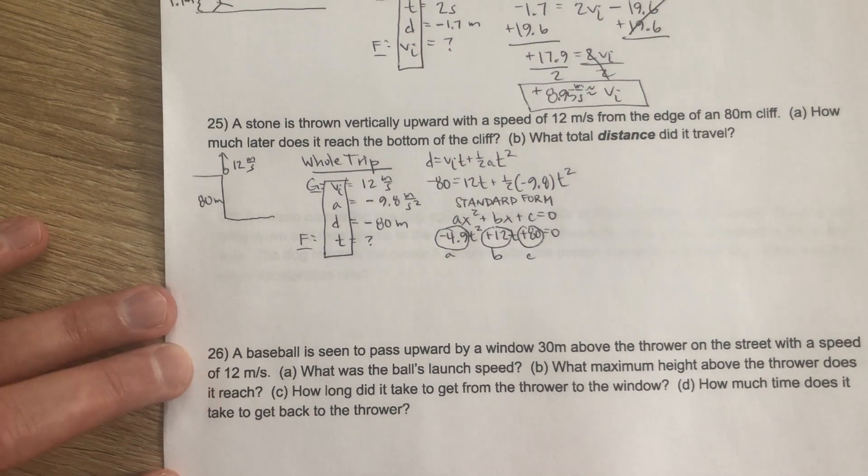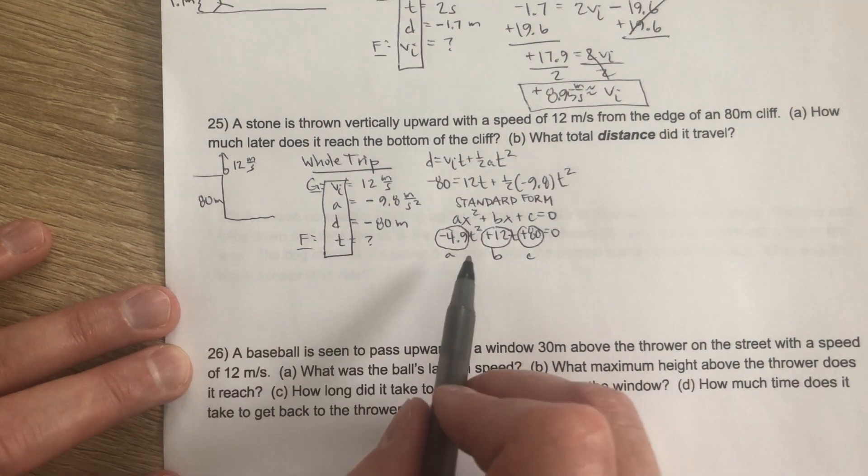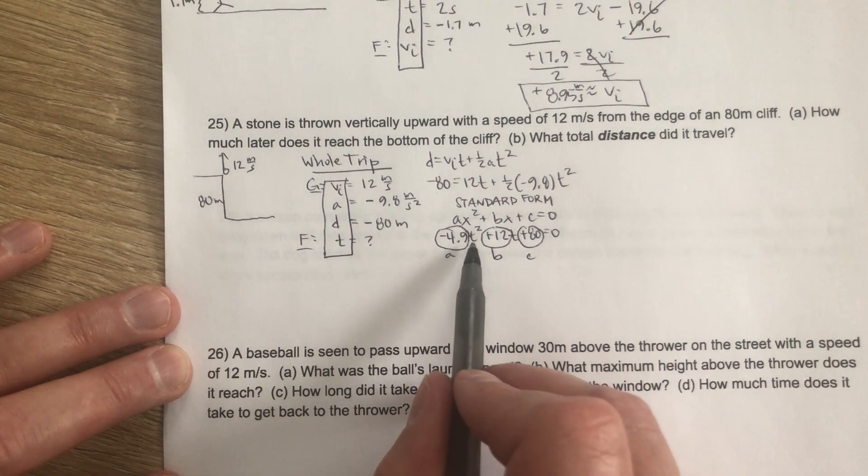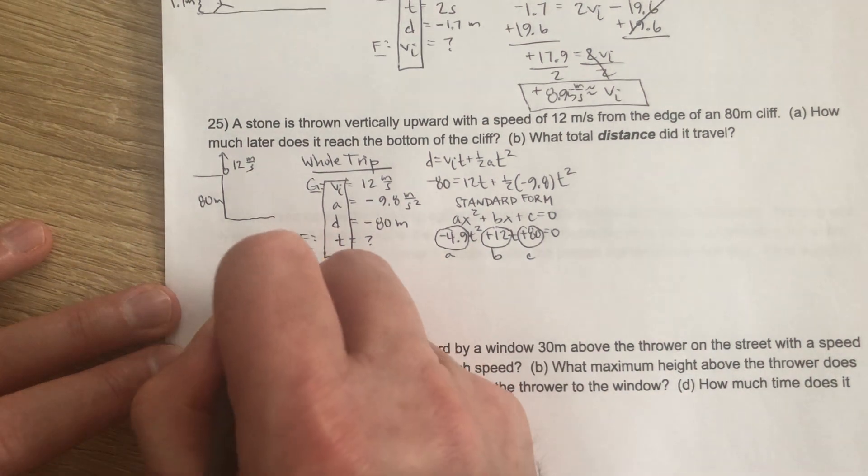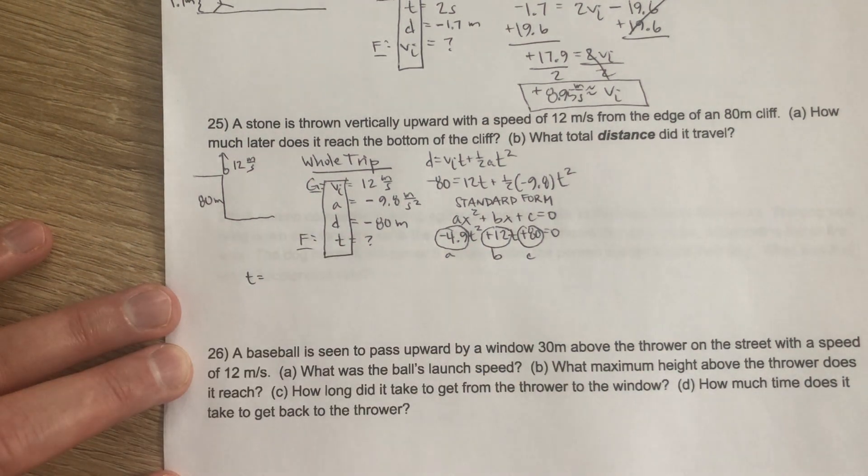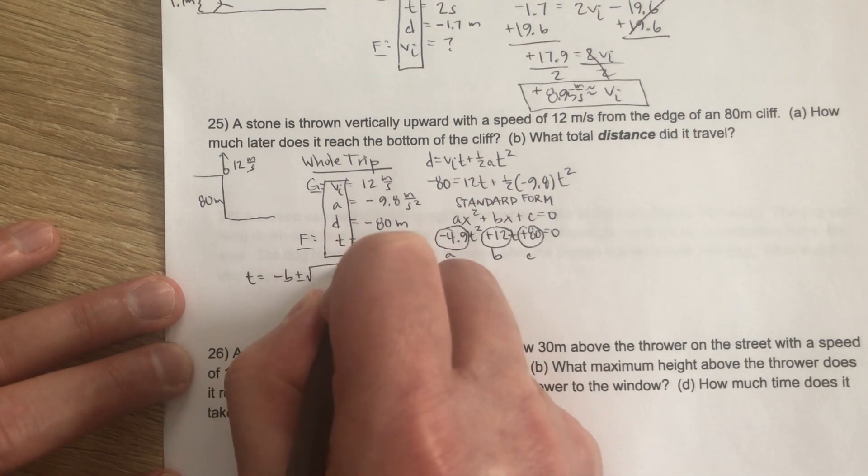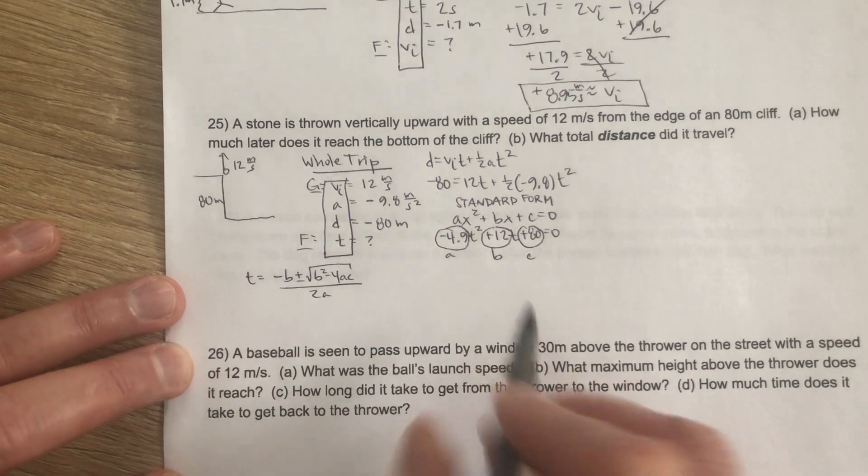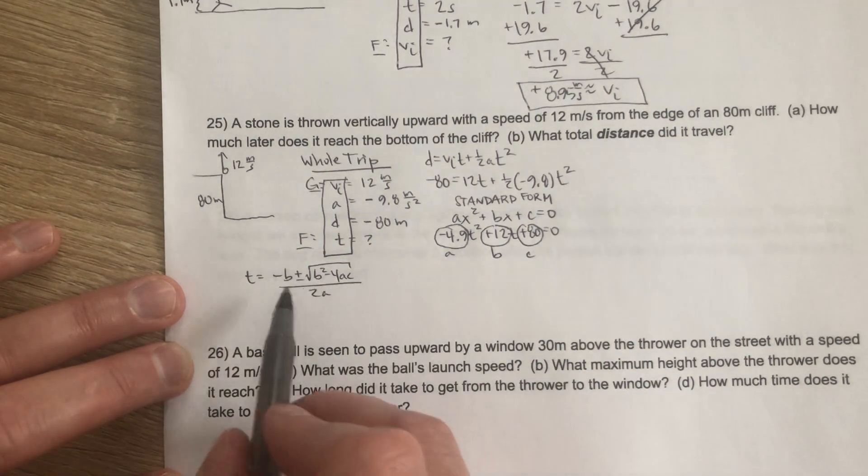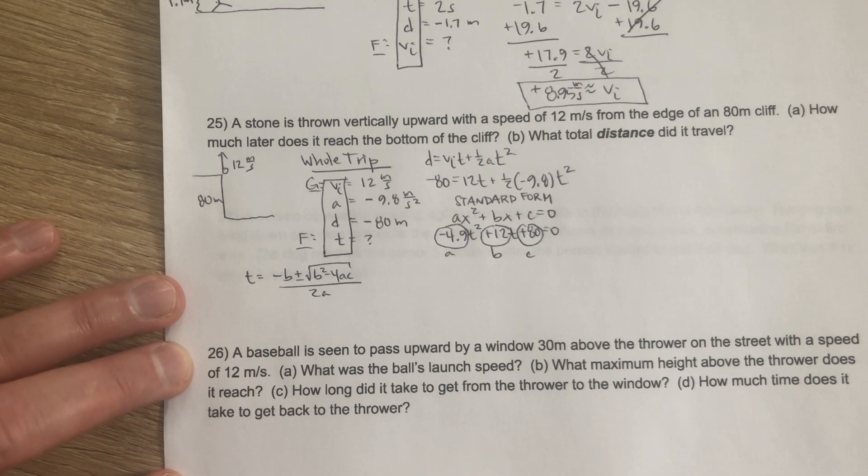So we can do a couple different things here, but the goal to figure out what values of time will make this equation true, you can do this manually with the quadratic formula. Negative B plus or minus radical B squared minus 4AC all over 2A. There's nothing wrong with that, and we have our A, B, and C values to use here. But that would obviously be kind of tedious.